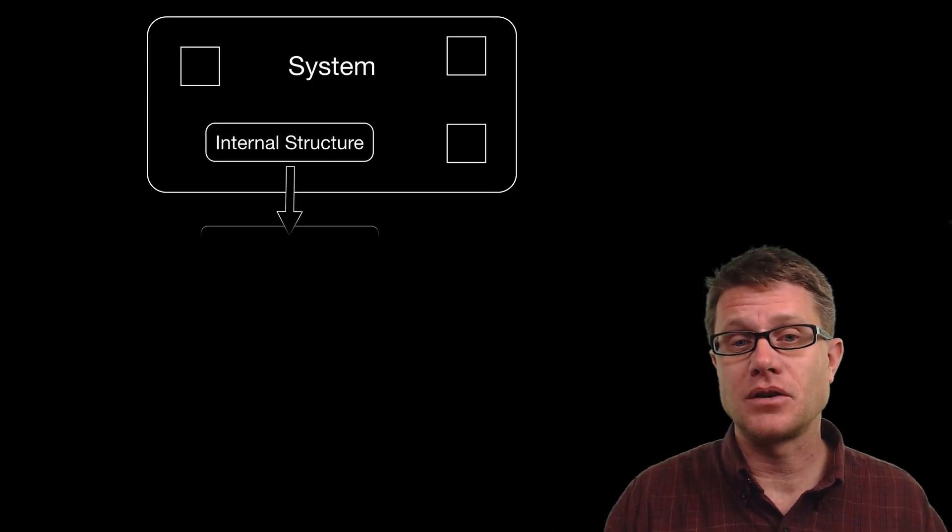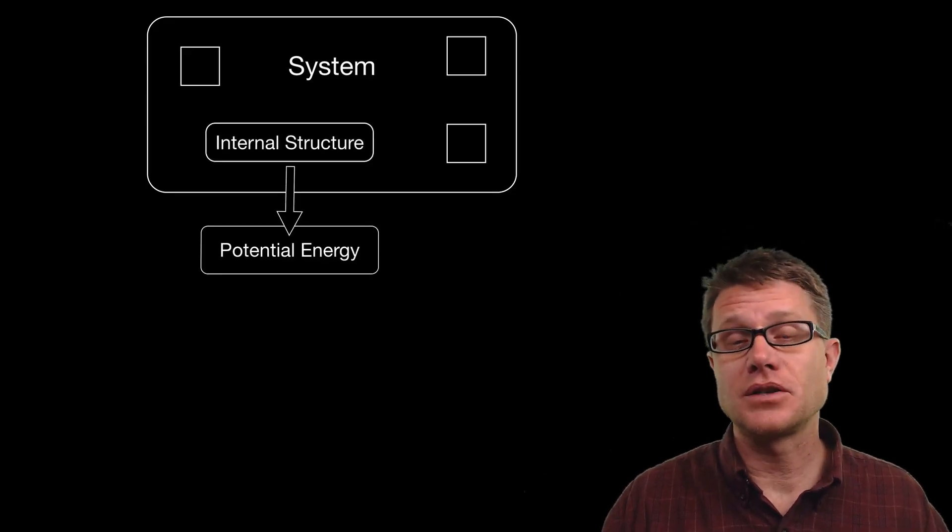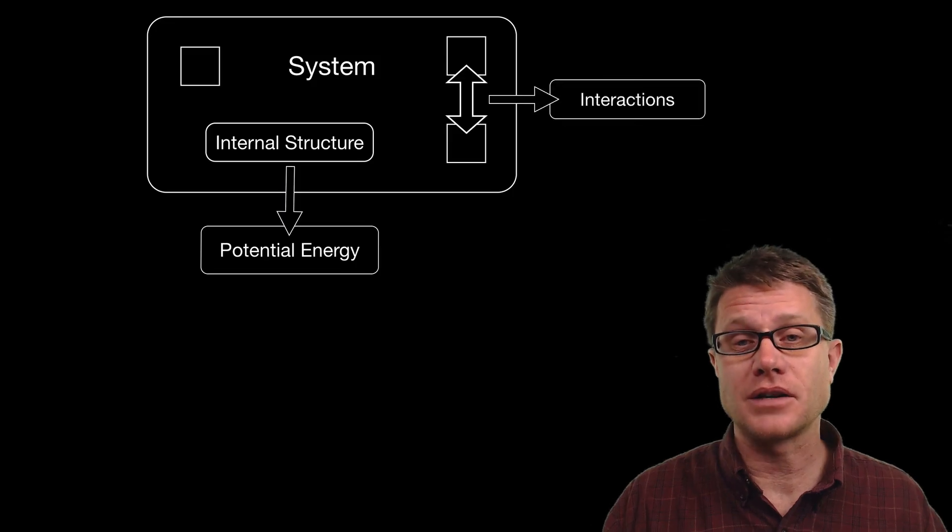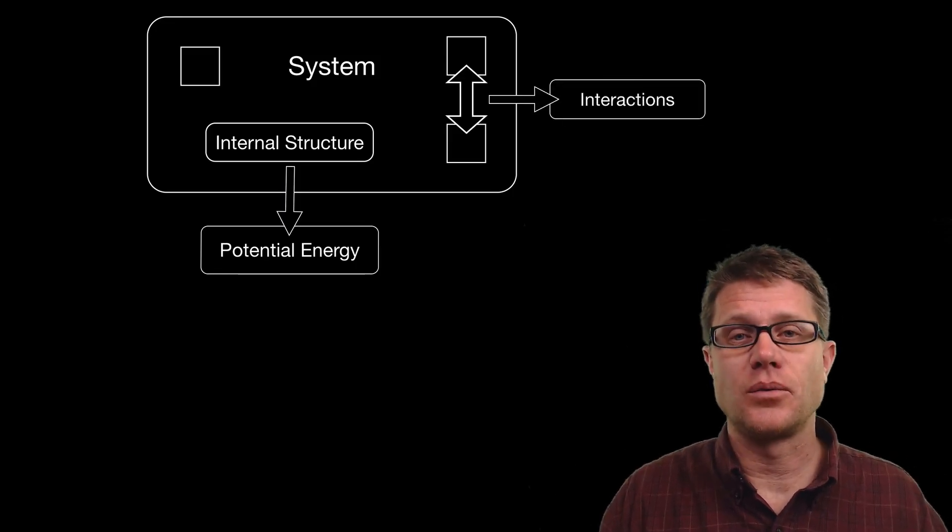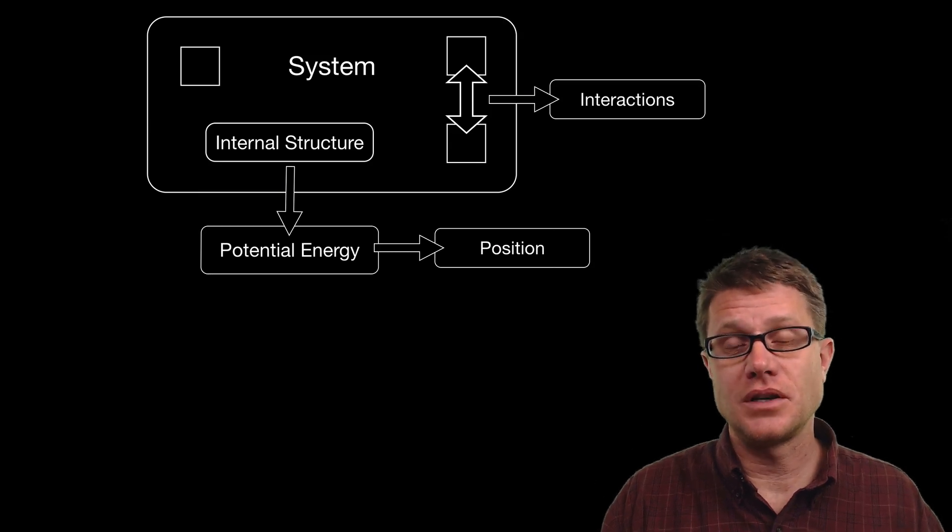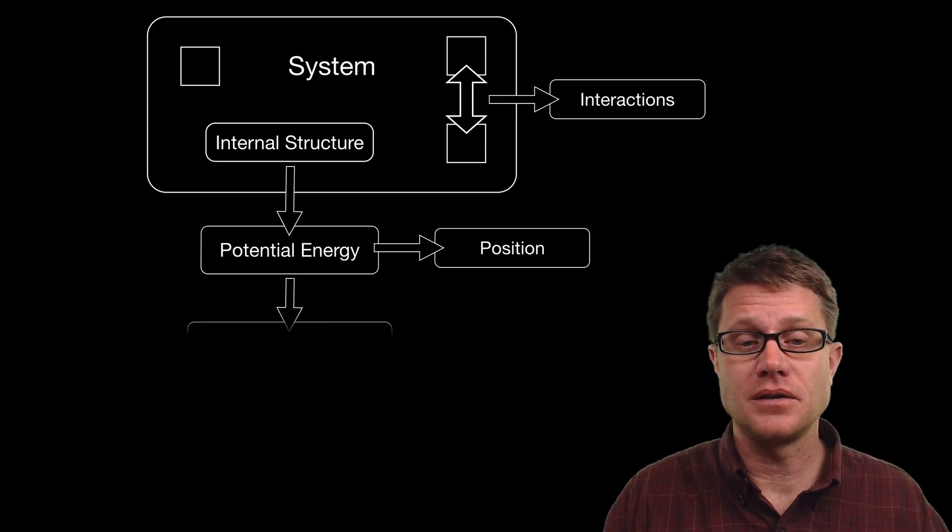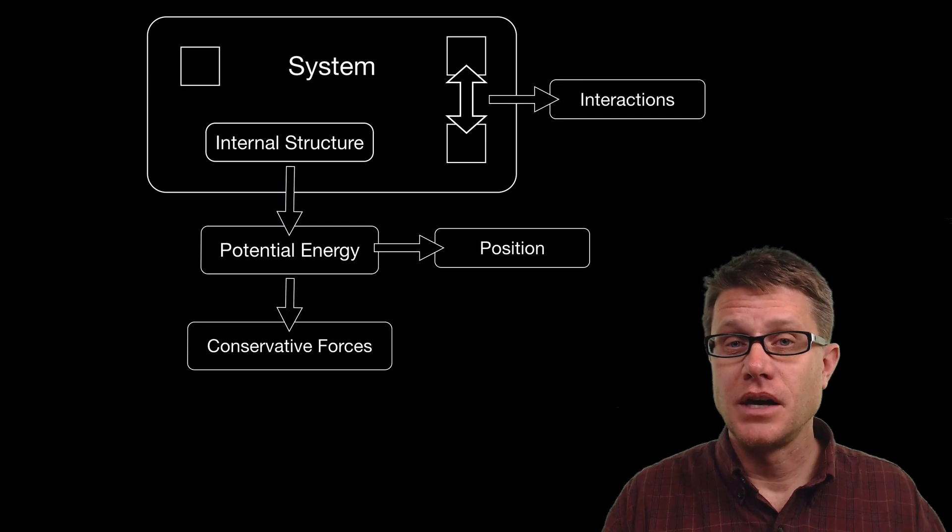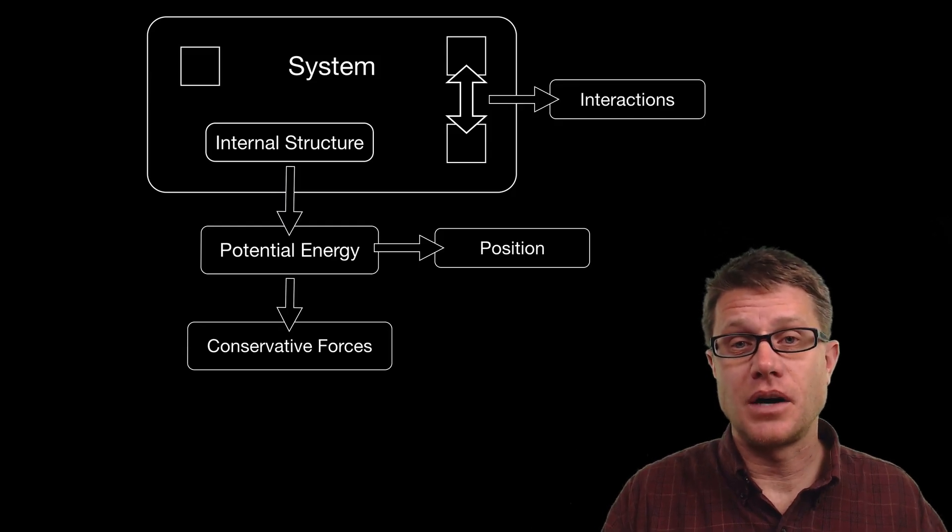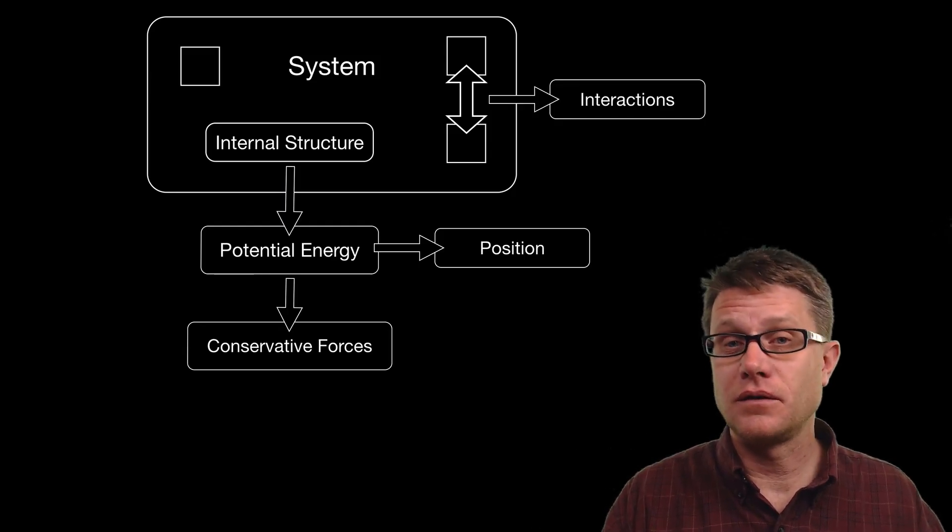If a system has internal structure, there can be potential energy due to the interactions between the objects inside that system. Your basic definition for potential energy is energy due to position—position of the objects within the system. Now this only works if those interactions between objects are conservative forces.